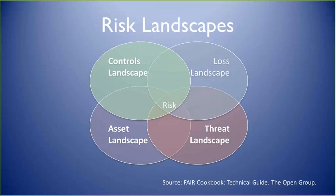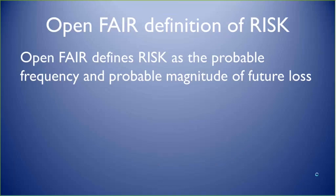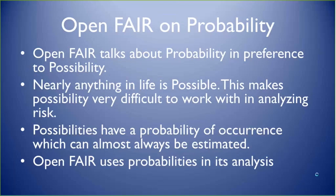Looking at the OpenFAIR standard, you can see the different areas we're trying to manage: various types of threats, assets we're trying to protect in order to minimize losses, and a set of controls we can implement. The OpenFAIR standard defines risk as the probable frequency and magnitude of future loss. We're dealing here with probability, not just possibility — it's possible that just about anything can happen, but here we're talking about a numeric measurement of the probability of an event occurring, doing a quantitative analysis of the probability rather than just the possibility.